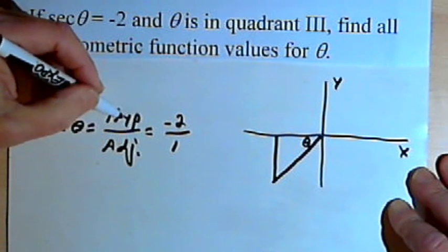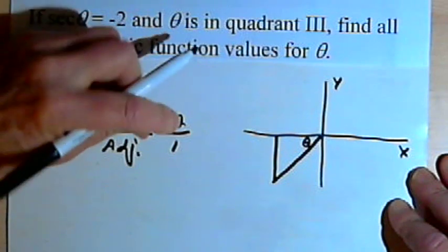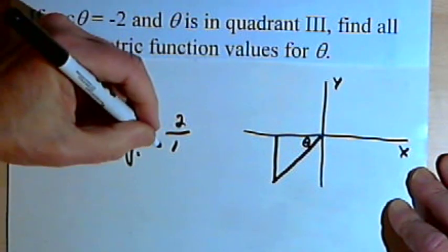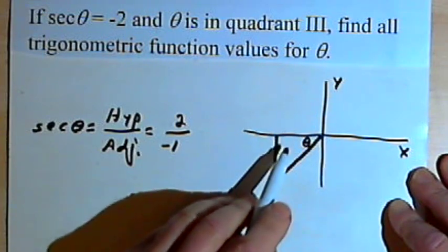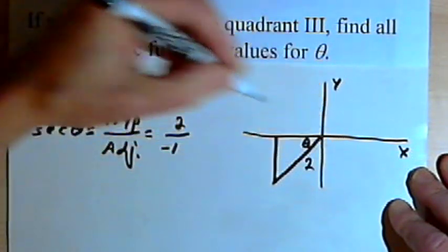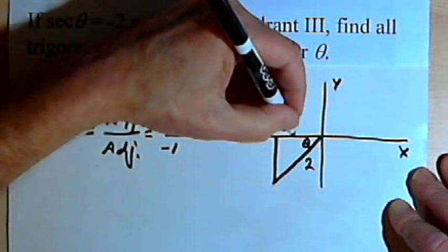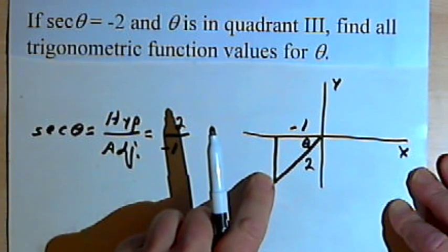But that would mean that the hypotenuse was negative 2. And the hypotenuse is always going to be a positive length. So I'm going to take the negative sign and move it down to the denominator. Now I can fill in part of this triangle. The hypotenuse is going to have a length of 2, and the adjacent side will have a length of negative 1.